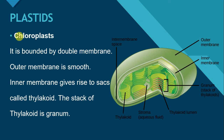Chloroplast: 'Chloro' here means chlorophyll and 'plast' means plastid. Chloroplasts are the type of plastids which contain chlorophyll. Let us discuss the structure of chloroplast.